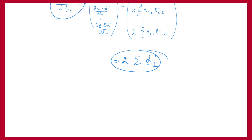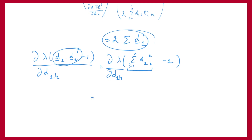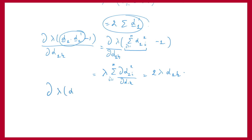The second part of the function f is the penalty term for the constraint that alpha_1 should have norm 1. So I also need to calculate the derivative of lambda * (alpha_1 * alpha_1^T - 1) with respect to alpha_1k. I can rewrite alpha_1 * alpha_1^T as a summation. When I take the derivative with respect to alpha_1k, I only need to look for the element where i equals k, because all other derivatives are zero. Taking the derivative of this with respect to the vector alpha_1, we find that this equals 2 * lambda * alpha_1^T.